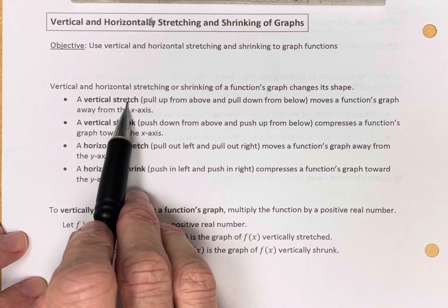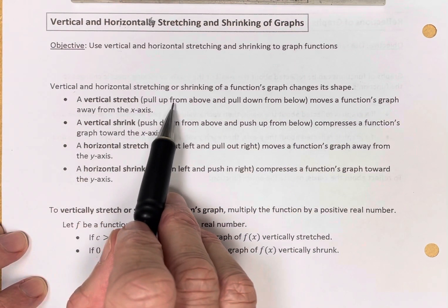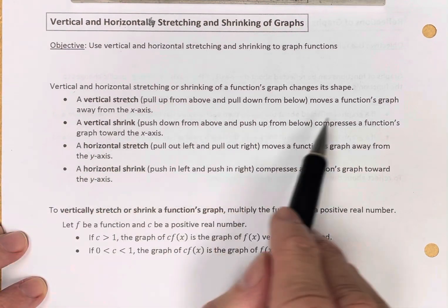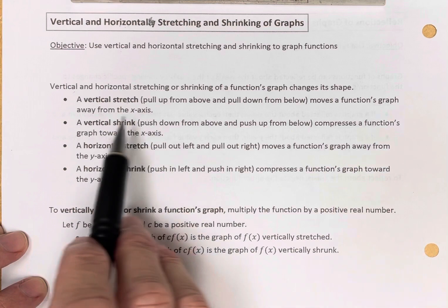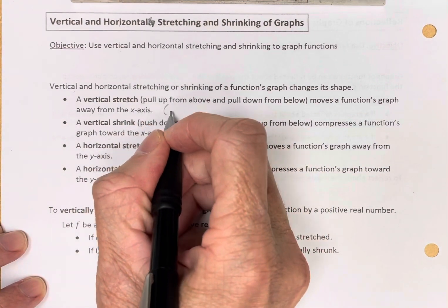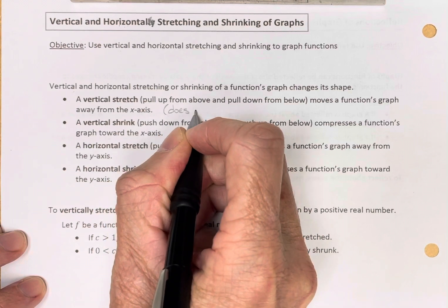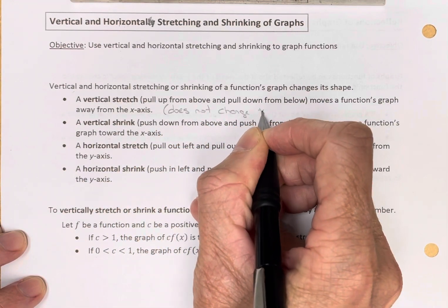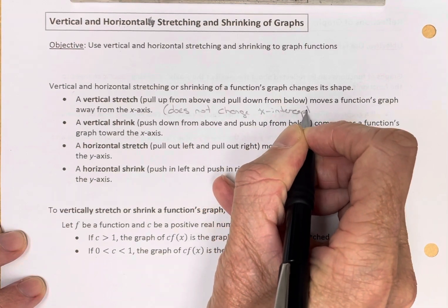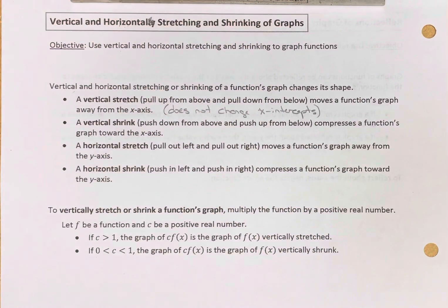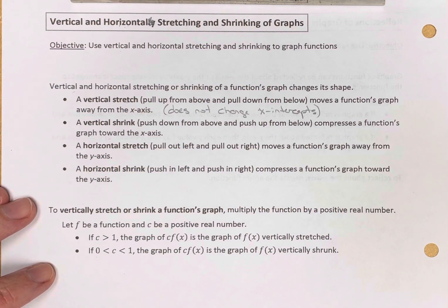A vertical stretch is when we pull up from above and pull down from below — that moves a function's graph away from the x-axis. It does not change x-intercepts; when you pull away from the x-axis, you're not going to change the x-intercepts.